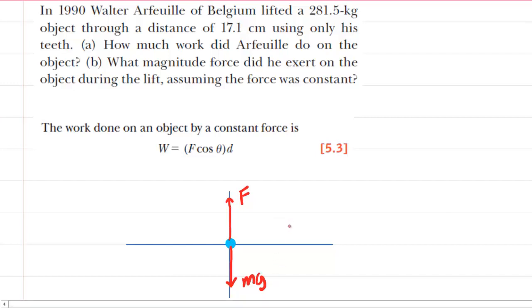One thing we have to assume in this question is that the object's being lifted at a constant speed. The question doesn't really note that, but we can imagine that he's pulling very slowly on this object, and it's just moving along at a constant speed. So with that assumption, we can then turn over here to the work equation. The work equation tells us that the work is equal to the force times the cosine of an angle times a distance.